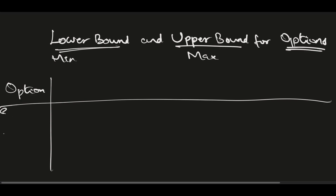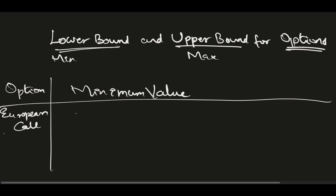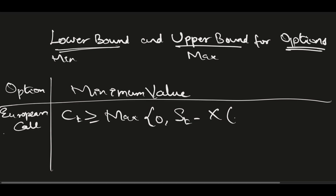For European call option, the minimum value will be: call option price at time t is greater than or equal to maximum of 0 or spot price at time t minus present value of the strike. Here x indicates strike. Present value of the strike can be written as strike times (1 plus risk-free rate) raised to minus (capital T minus smaller t).